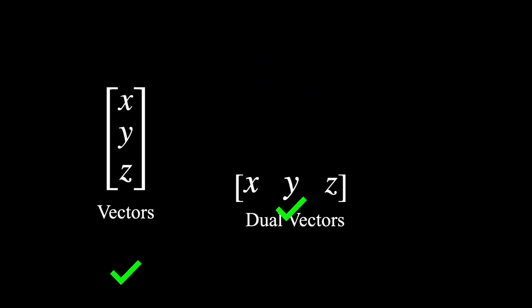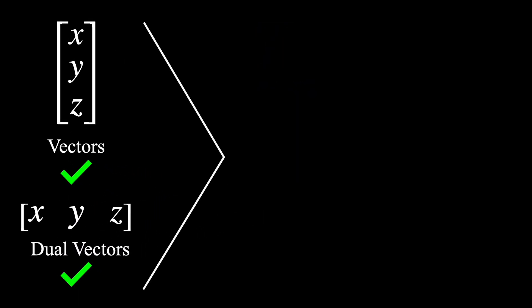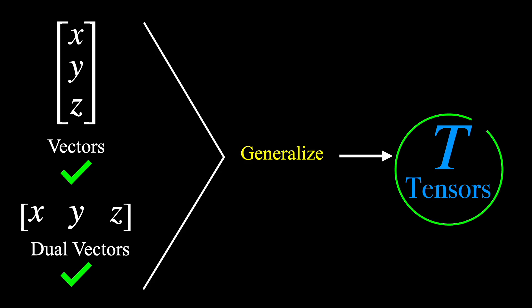In this video I will guide you through a two-step process where we will first review what vectors and dual vectors actually are, and then we'll see how this generalization occurs. By the end of the video you will understand exactly what a tensor is.